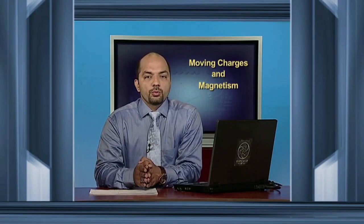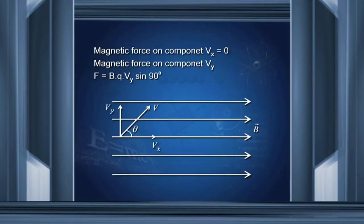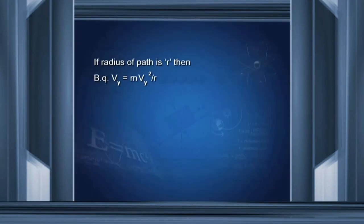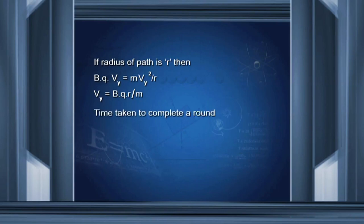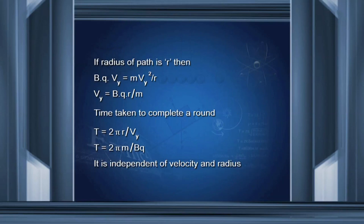Now we calculate the force on component Vy. The force F equals BQ Vy into sin 90. Under the action of this force, the charge undergoes circular motion. If radius of the path is R, then BQVy equals mVy squared divided by R, so velocity along the y-axis equals BQR upon m. The time taken to complete the round T equals 2πm upon BQ. Once again, the time period is independent of the velocity and the radius.